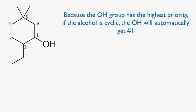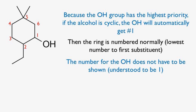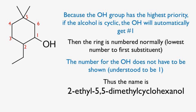Rule number 5. Because the OH group has the highest priority, if the alcohol is cyclic, the OH will automatically get number 1. Then the ring is numbered normally, like all the alkane rules — that is, in the direction that gives the first substituent after the OH group the smallest number. When we write the name of the cyclic alcohol, the locant for the OH group does not need to be indicated, because it is always understood to be 1. Thus, the name of this alcohol becomes 2-ethyl-5,5-dimethylcyclohexanol.